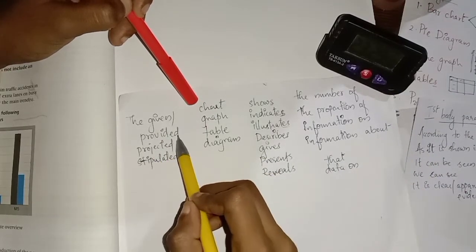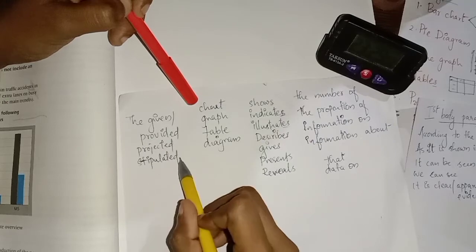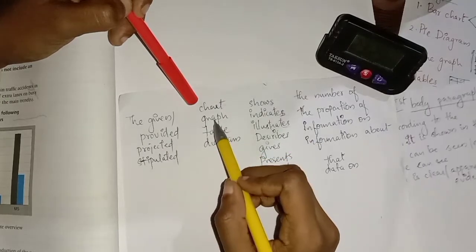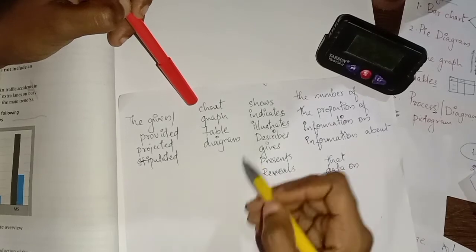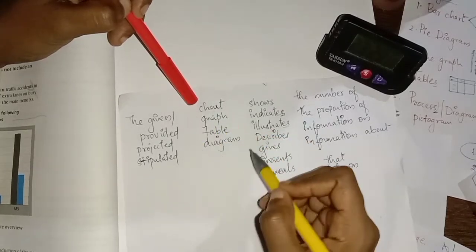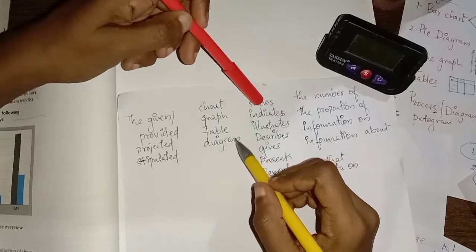Or the provided, or the projected, or the stipulated chart or stipulated graphs, or projected table or diagram. You can write based on whatever data is provided. Then comes, you're going to write...